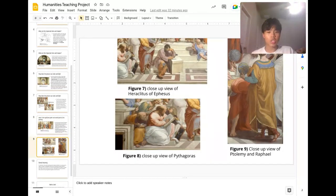In Figure 7, it shows the close-up view of Heraclitus of Ephesus. In Figure 8, it shows the close-up view of Pythagoras. And in Figure 9, it shows the close-up view of Ptolemy and Raphael, the painter of the School of Athens.